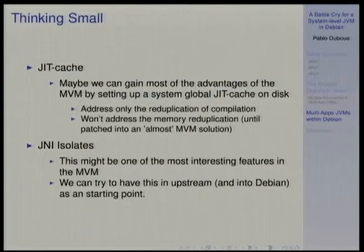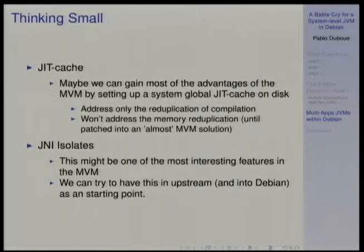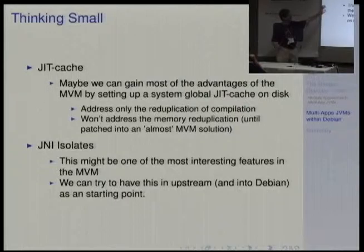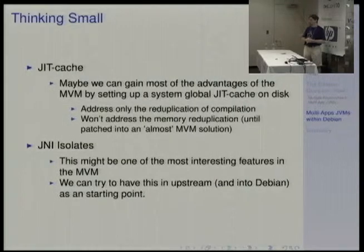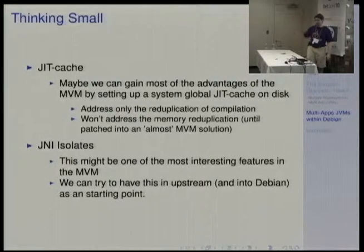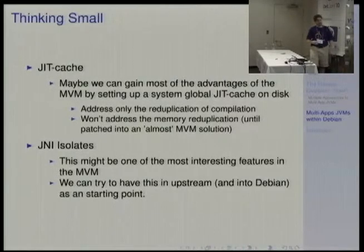So those are the larger ideas. If we just want some of this technology, maybe we can start thinking small and say: maybe we just want a cache for the just-in-time compilation results. A global JIT cache won't really address the memory duplication issue — if you want to address memory duplication you'll almost end up needing a full MVM solution. The only thing a JIT cache addresses is the duplication of compilation time. You write the JIT results into the cache the first time, but because of initialization barriers you still have to load it in RAM and then replace it with the barrier removed after it has been through.